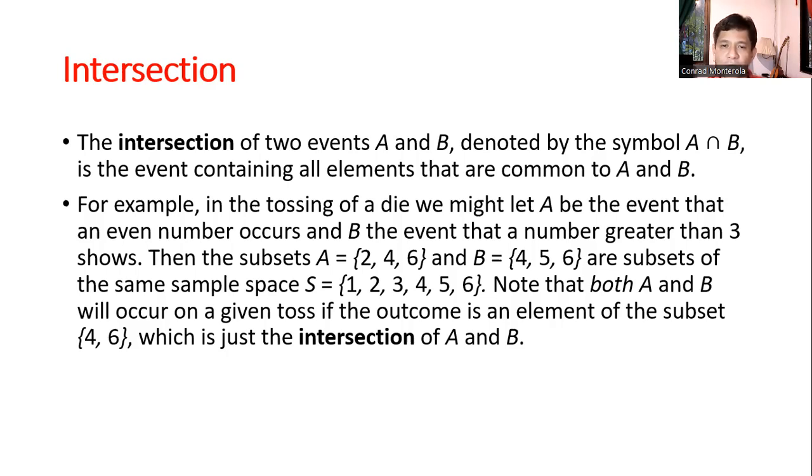So when you write, for example, A intersection B, and A equals 2, 4, 6, and B equals 4, 5, 6. So as you can see, the common element of set A and set B are elements 4 and 6. So the intersection of A and B is simply 4 and 6. This is quite simple. I hope you get the gist of the definition of intersection. It's just the common elements on two sets.